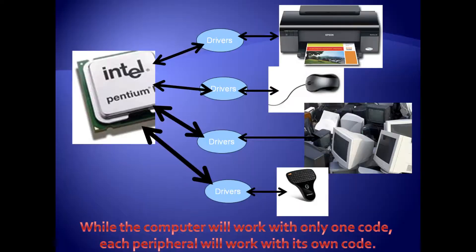The CPU and the entire operation of transferring information from one object to another on the computer deals with only one code — a binary code. It's a series of switches that are on and off. When you have different peripherals attached to your computer, such as a keyboard, mouse, or printer, they're all different manufacturers and will have their own codes of operation to bring out the best results. Just like different manufacturers of printers, they're all copyrighted and need their own process of working.